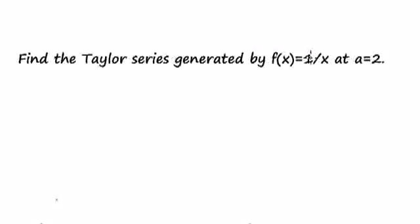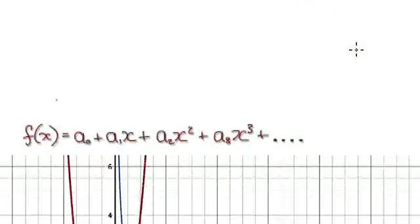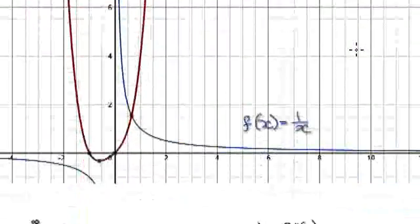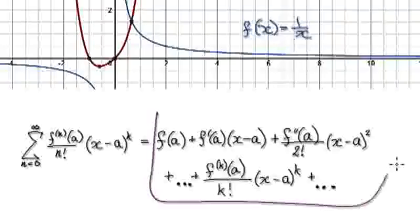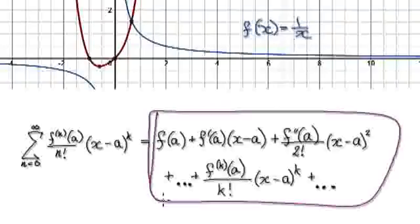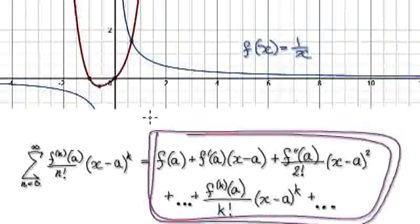In this video, we're going to find the Taylor series generated by 1 over x at a equals 2. Let me remind you of the Taylor series — it is of this form, and we are trying to seek something of this form.